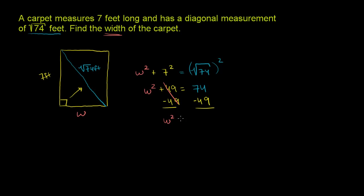Equal to, what's 74 minus 49? Well, we could do a little bit of regrouping here. We can make this a 14. This becomes a 6. 14 minus 9 is 5. 6 minus 4 is 2. So W squared equals 25.